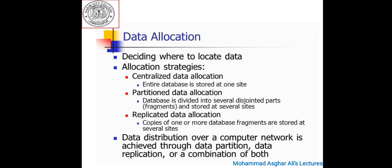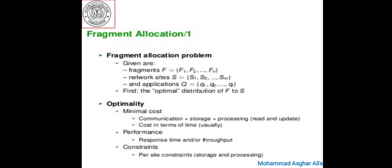Data distribution over a computer network is achieved through data partition, data replication, or a combination of both. Now discussing the allocation problem: we assume there is a set of fragments F = {F1, F2, ... Fm}, a network consisting of sites S = {S1, S2, ... Sm}, and a set of applications Q = {Q1, Q2, ... Qq} running on those sites.